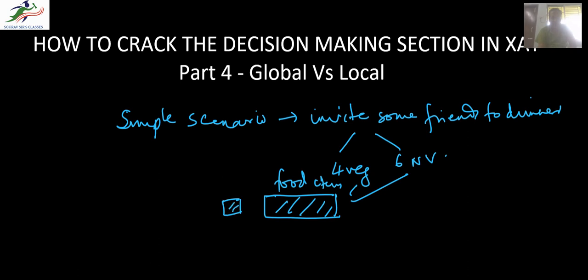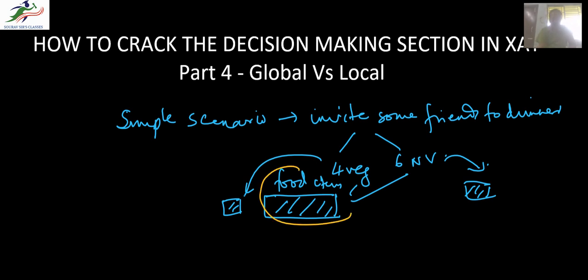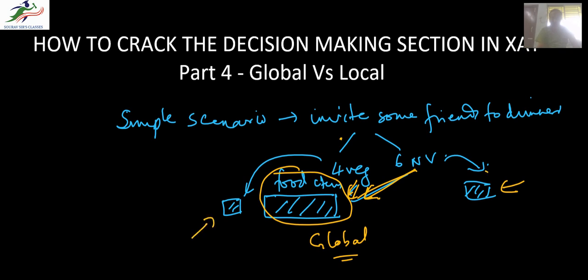You might have some specialties only for the vegetarian and some specialties only for the non-vegetarian. When you do this kind of problem-solving, you always tend to think about food items which can be consumed by both kinds of people — that means you are approaching the situation from a global perspective, which is applicable to the entire population — and then you also have some local aspects which are specialty items for each group.